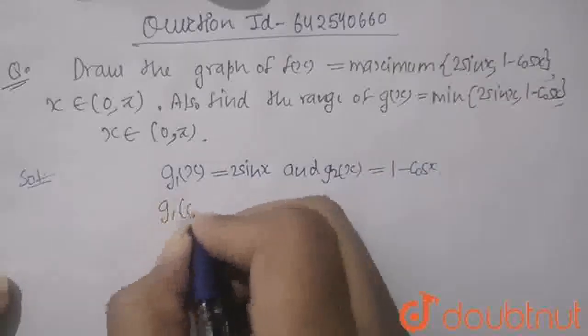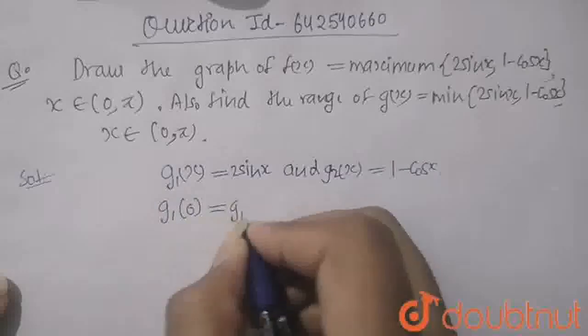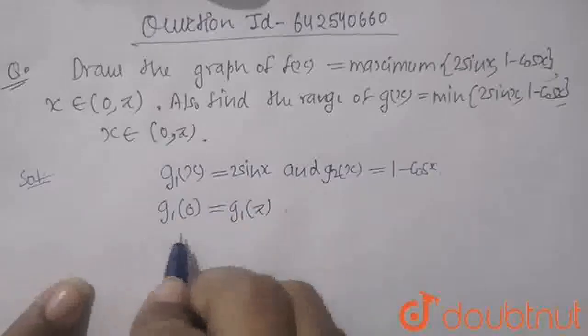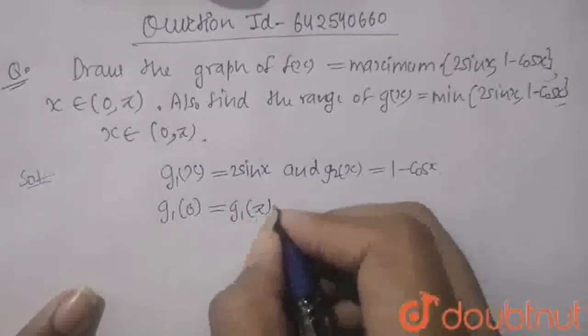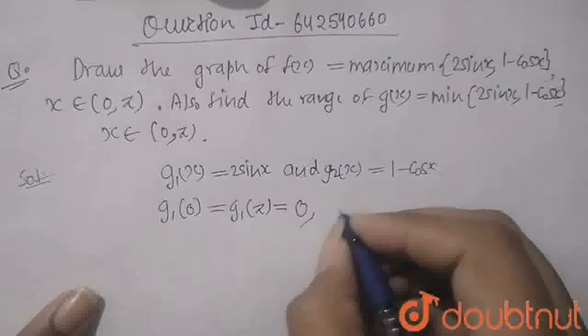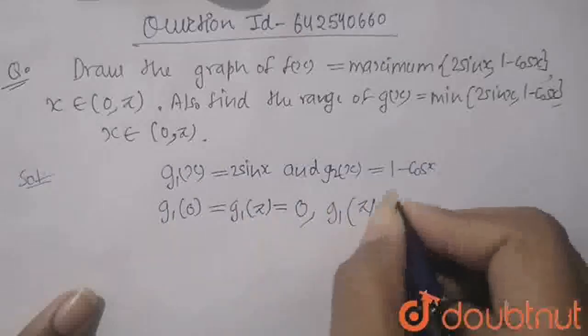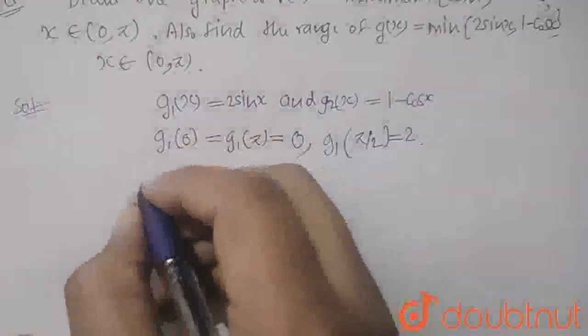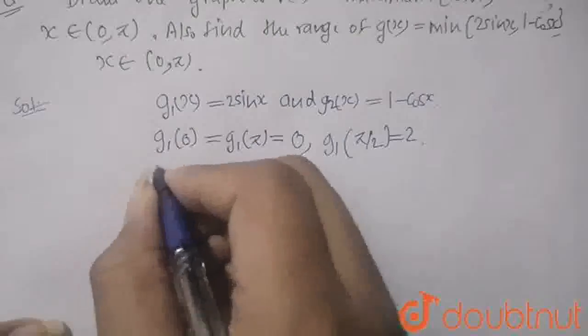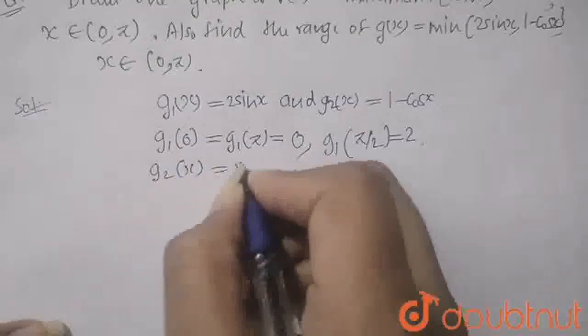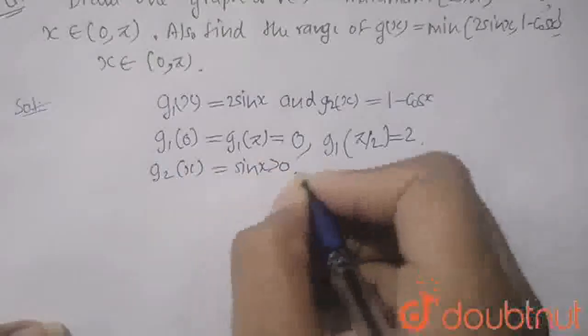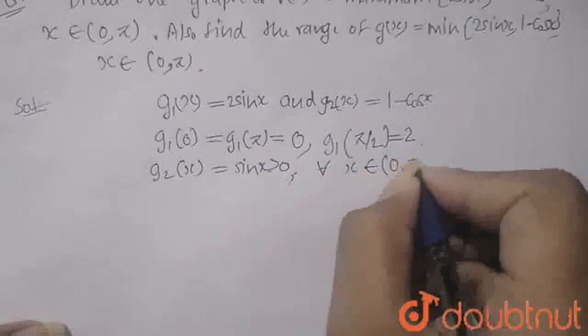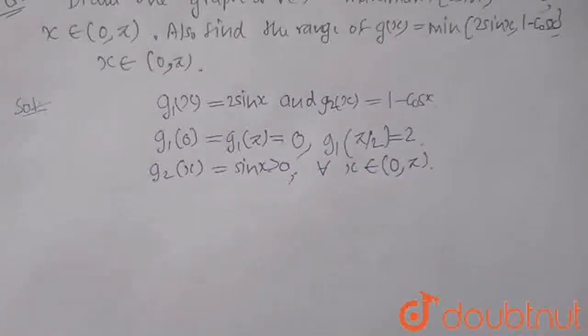Now, first when you put g1 of 0, you will get g1 of pi also equals 0. So these both values will be equal to 0. And g1 of pi by 2 is equal to 2. We are calculating the coordinates for how the graph will be formed. And here, when g2x is sinx, it is greater than 0 only when x belongs to 0 to pi. So the g2 dash x is increasing.